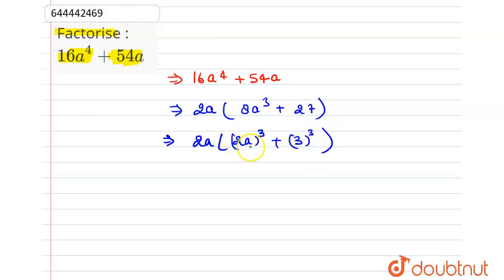Now this is in the form of a cube plus b cube. So we know the identity a cube plus b cube is equal to a plus b, a square plus b square minus ab. So here 2a is a and 3 is b.